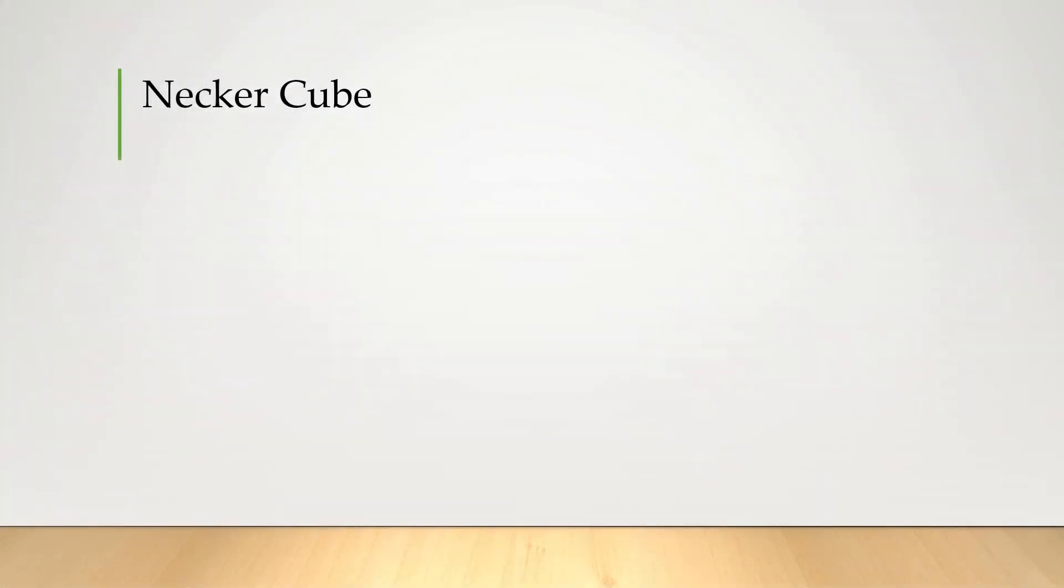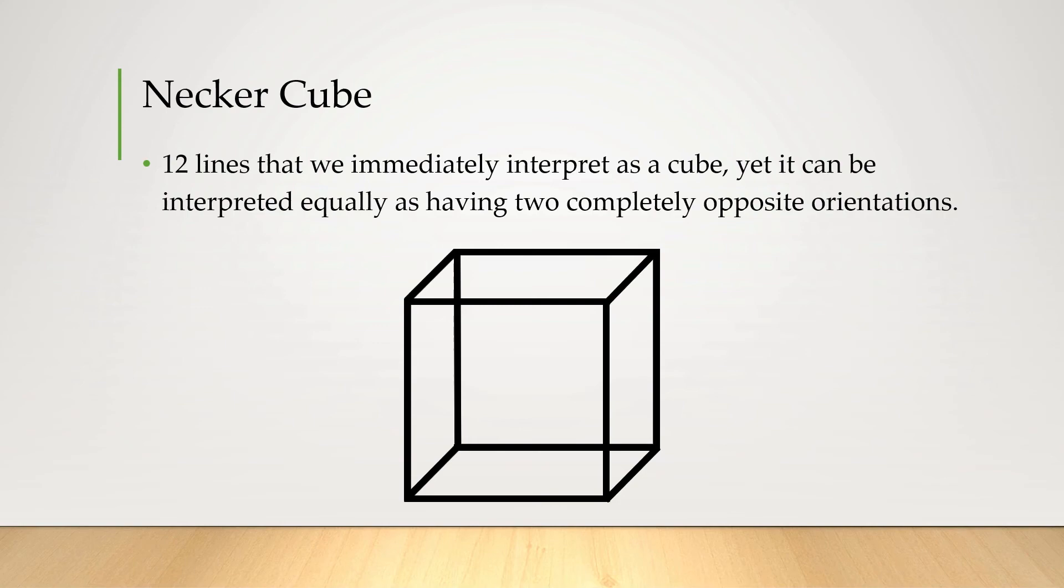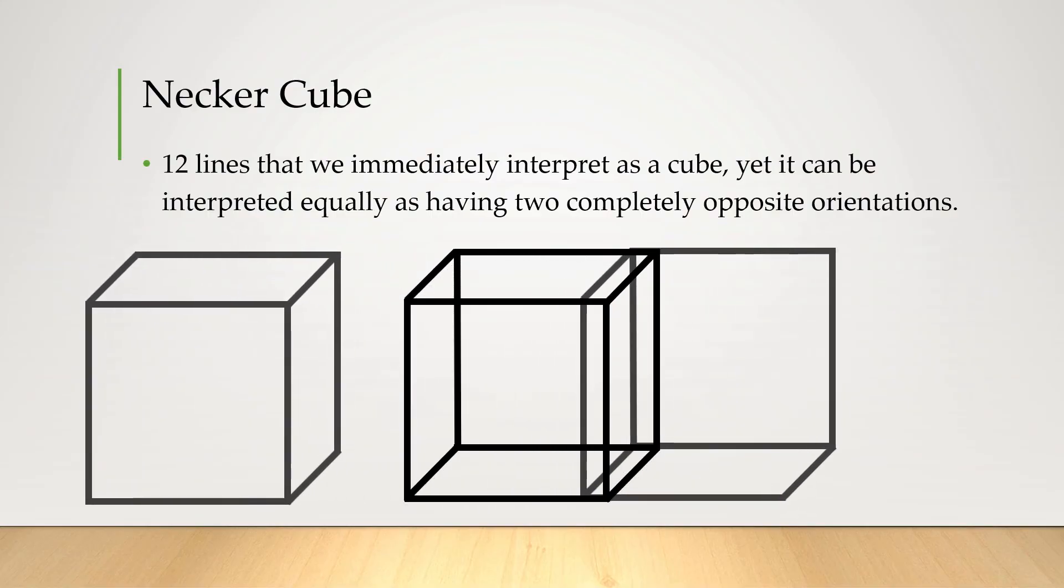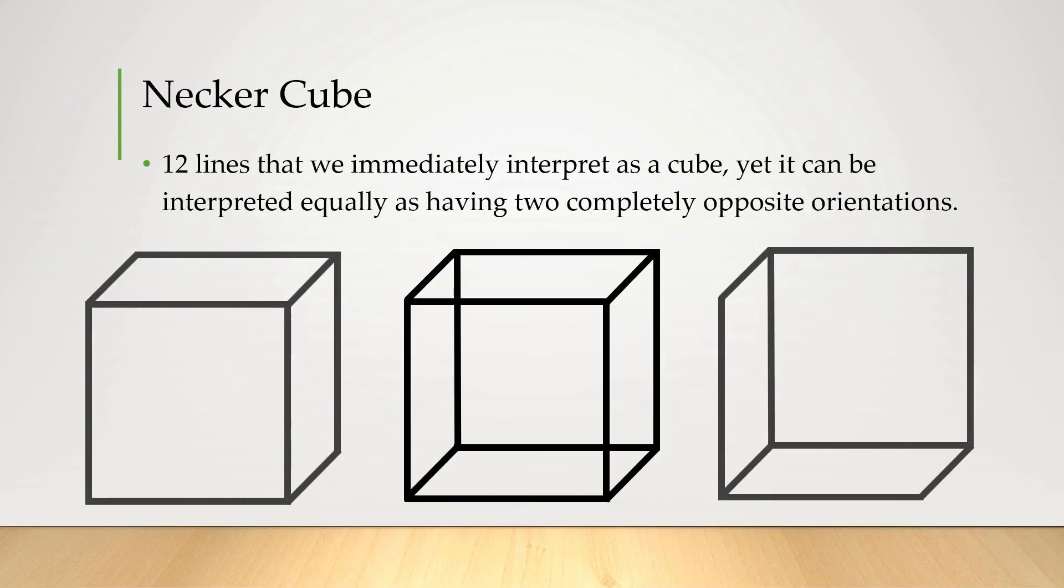And our final impossible figure is the Necker cube. This is just 12 simple lines that we instantly recognize as being a cube. But which way is it facing? Are you seeing this cube from top down or from bottom up? A mysterious mystery this one is.